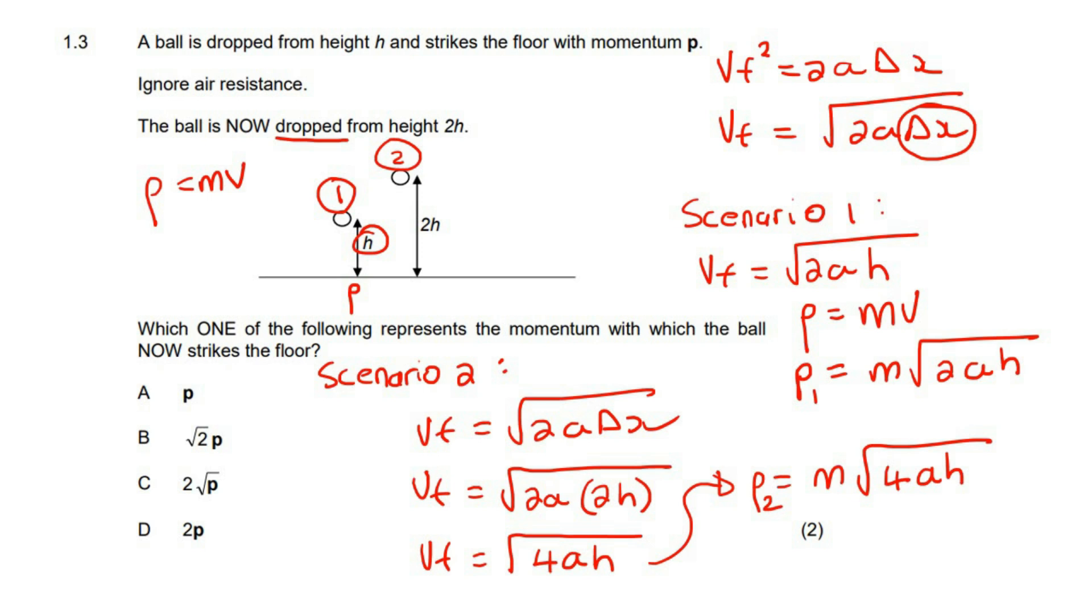We would like to know, they said that the original momentum was p, and now they want to know what is the new momentum in terms of p. So we can just say, what is p2 divided by p1? And so that would be m and then 4ah over m and then 2ah.